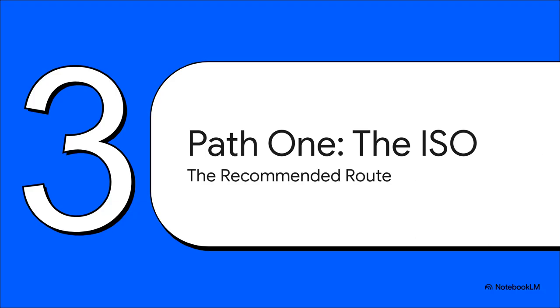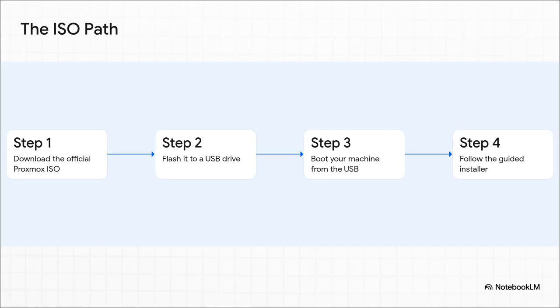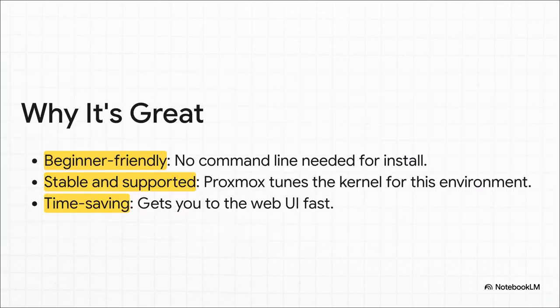First up, the main event: installing Proxmox directly from the official ISO file. This is the simple, straightforward, it-just-works method. The process really couldn't be simpler: go to the website, download the one installer file, use a tool to flash it onto a USB stick, pop that stick into your machine and boot from it, then just follow the on-screen guide. That's it — no command line, no messing with software packages. The reasons to go this route are huge: it's totally beginner friendly, it's the most stable and officially supported method, and it's so fast. You can go from a completely blank machine to a running hypervisor with a web login page in like 15 minutes.